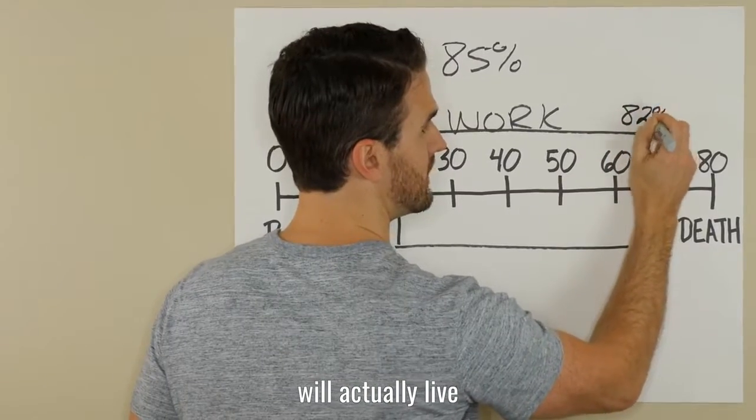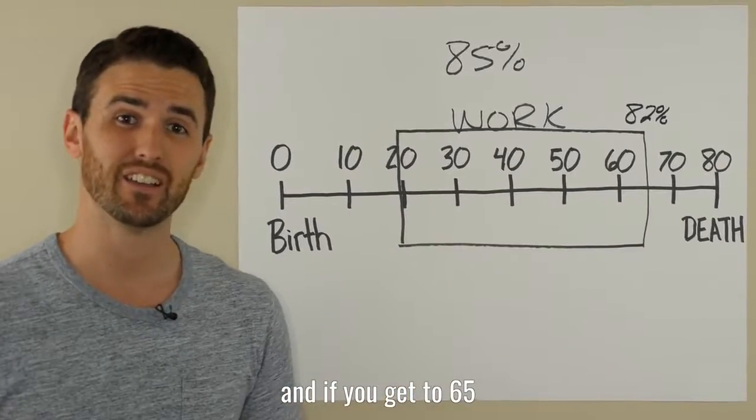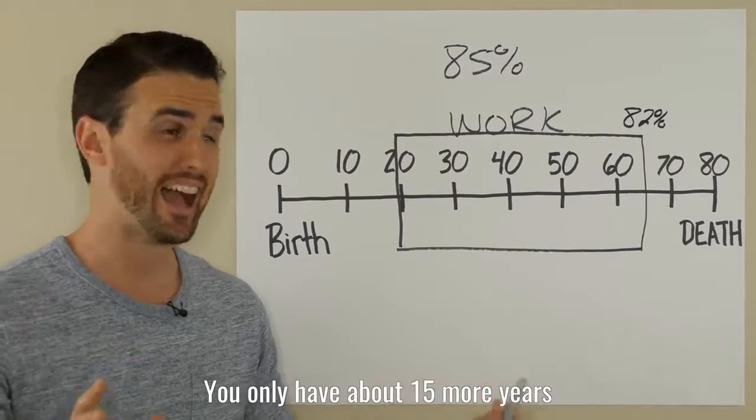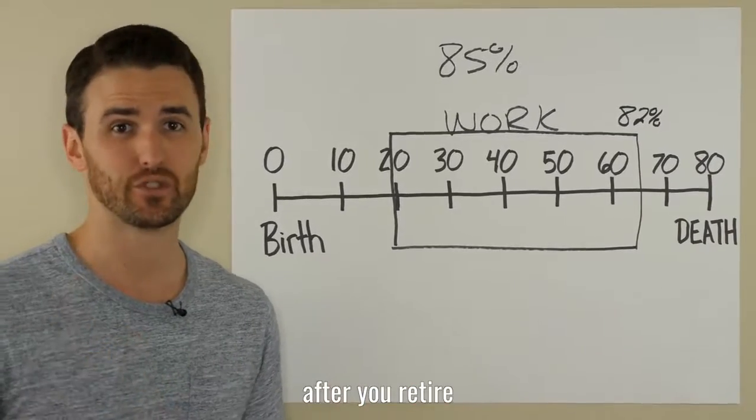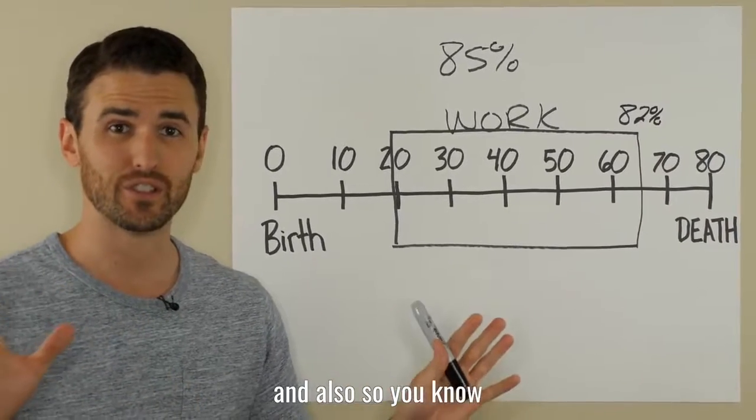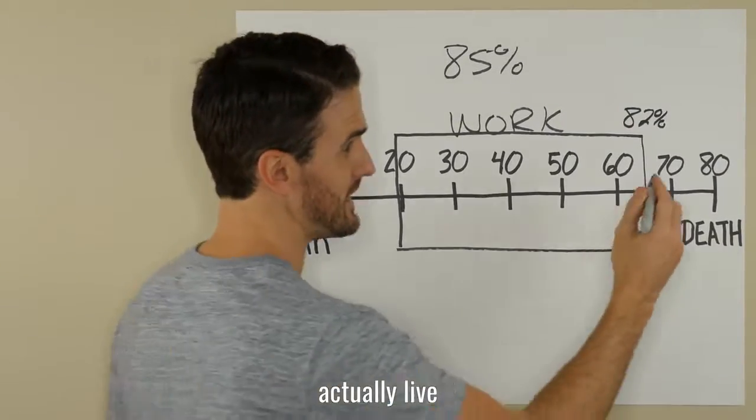live to the age of 65. And if you get to 65, on average you only have about 15 more years left to live after you retire. And also so you know, only 65 percent of people actually live into the age of 80.